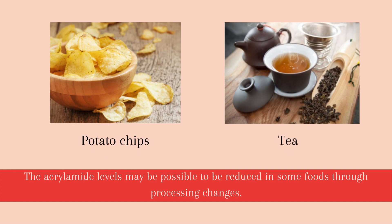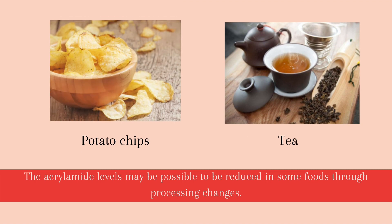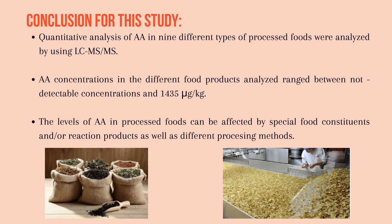The acrylamide levels in potato chips and tea suggest it may be possible to reduce levels in some foods through processing changes. Acrylamide concentration in non-potato-based chips was lower compared to potato chips, suggesting acrylamide accumulation is relatively high in potatoes due to high-temperature cooking relative to other carbohydrate-based materials. In conclusion, quantitative analysis of acrylamide in 9 different types of processed foods was performed using LC-MS-MS, with acrylamide concentrations ranging from non-detectable to 1,435 micrograms per kilogram. Levels of acrylamide in processed foods can be affected by food constituents, reaction products and different processing methods.